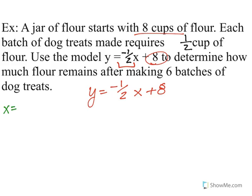X is the number of batches of dog treats. If you struggle determining this, think about what the slope represents. This is a half of a cup of flour per batch, right? Each batch, that means x is the number of batches that we're making. So then y is the remaining or the total flour. How much do we have left?